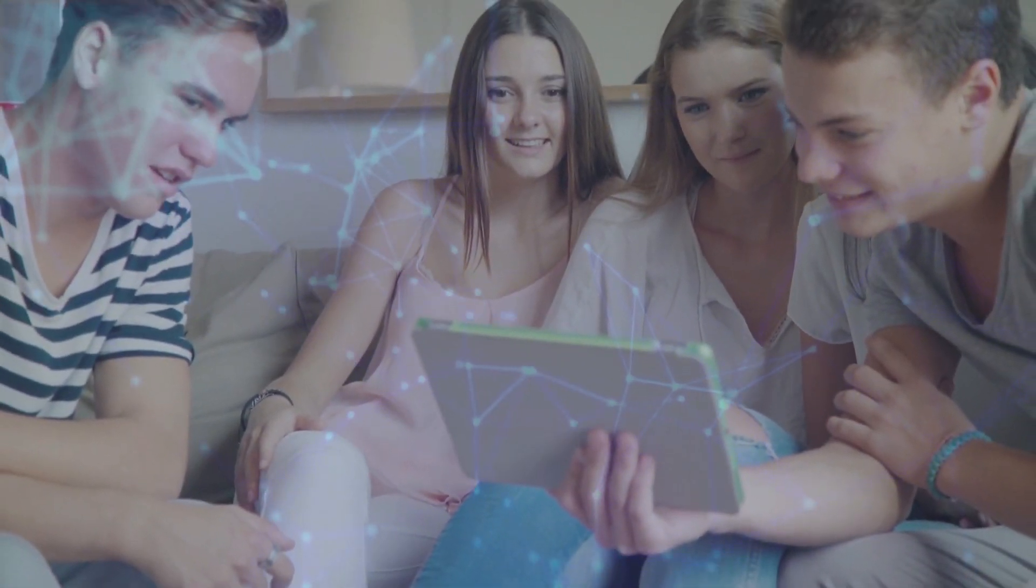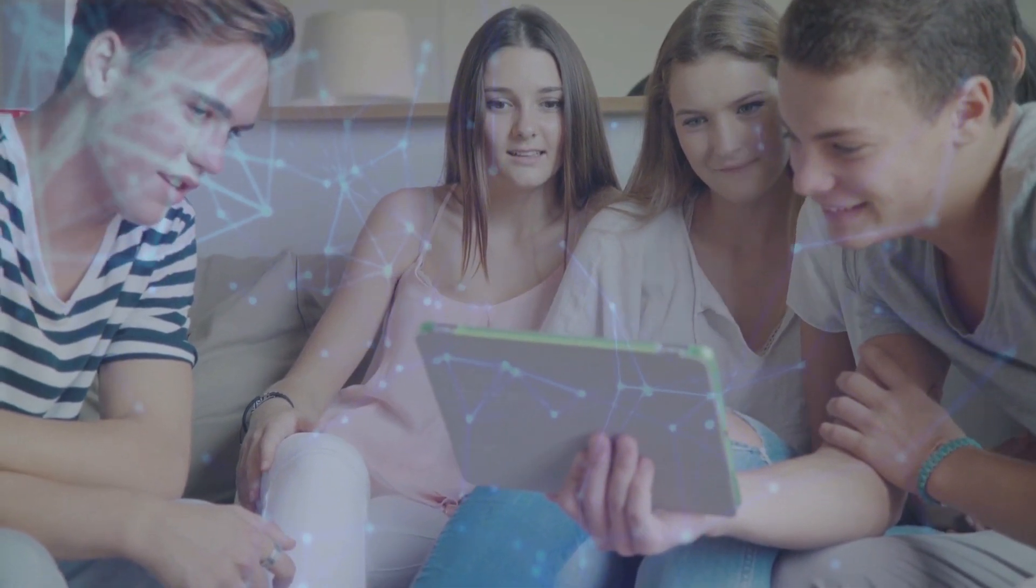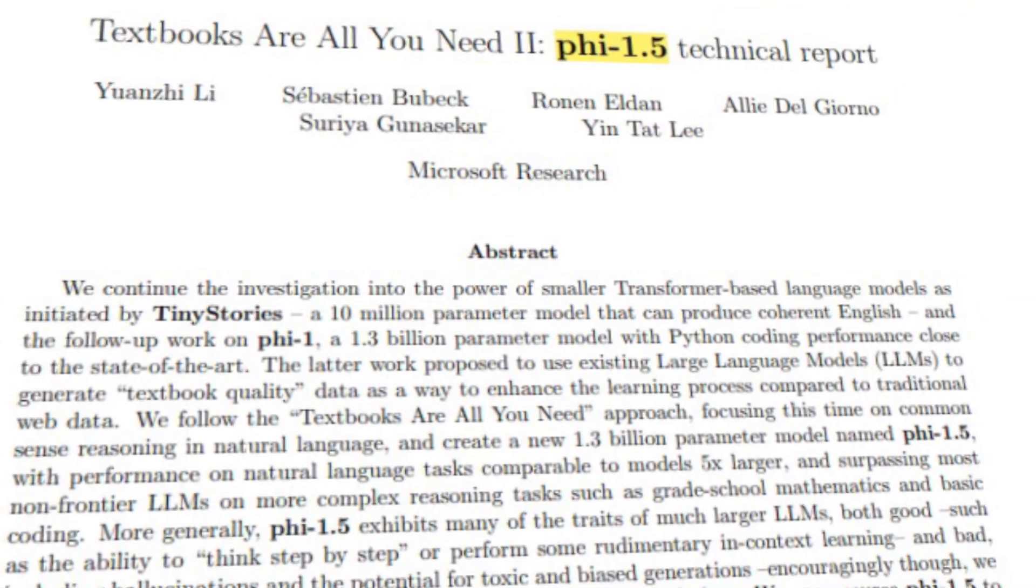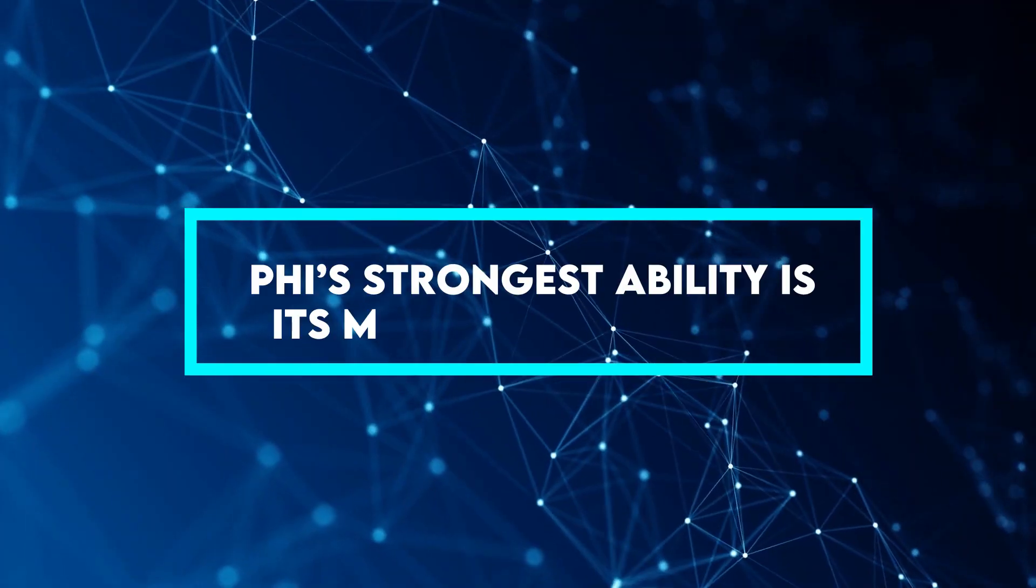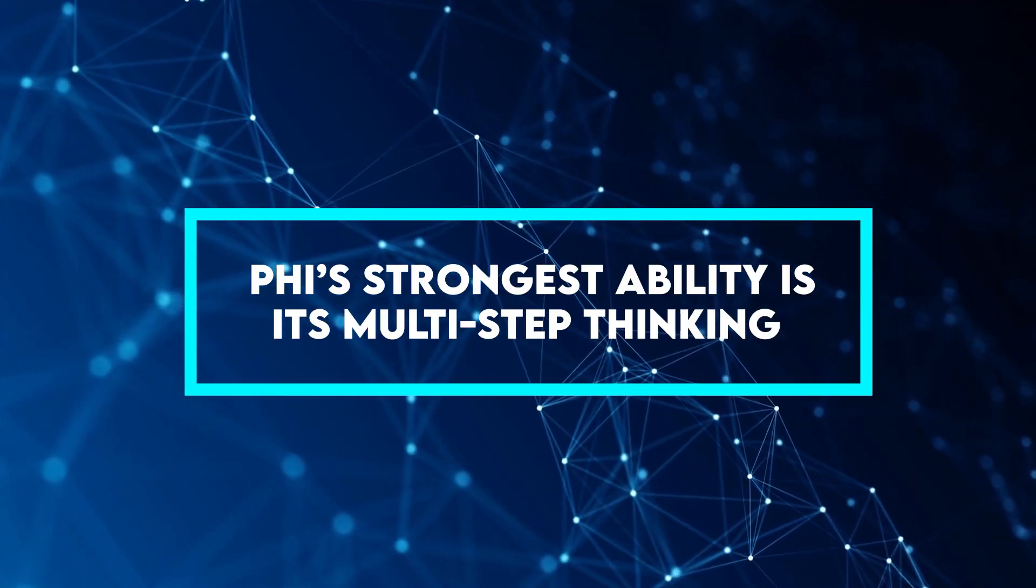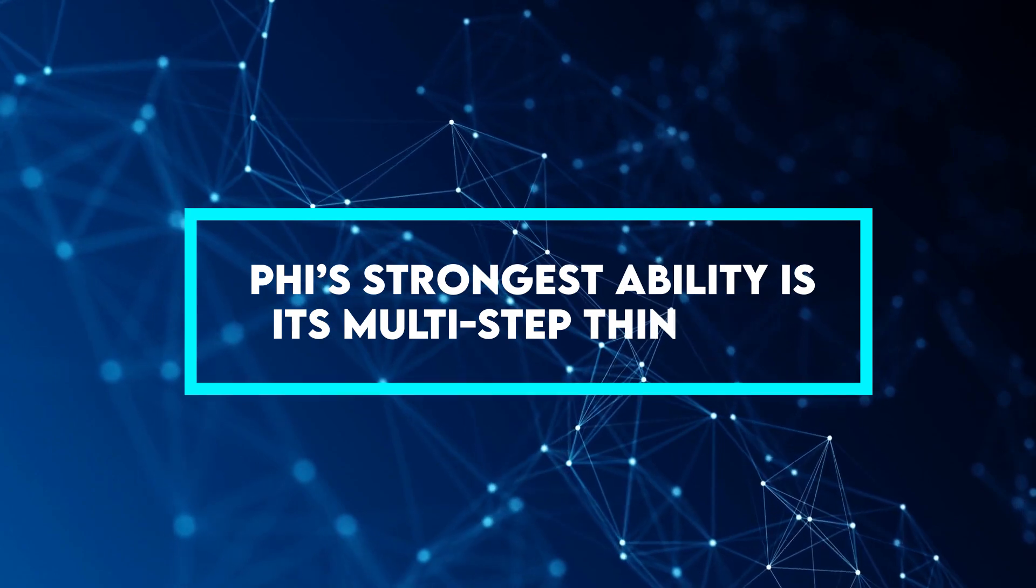And now, let's get to everybody's favorite section of the review, the part where we see what PHI 1.5 is capable of. PHI's strongest ability is its multi-step thinking, which means it can explain answers in steps.